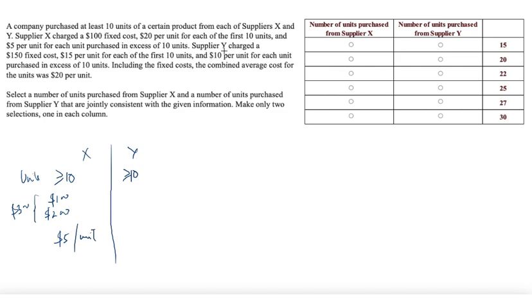Now supplier Y charged a $150 fixed cost. $115 per unit for each of the first 10 units. So again, since the company did purchase at least 10 units, $1150 here, so this is also $1300. And $10 per unit for each unit purchased in excess of 10 units. So here this is $10 per unit. This one is $5 per unit for more than 10 units. This is $10 per unit for more than 10 units.